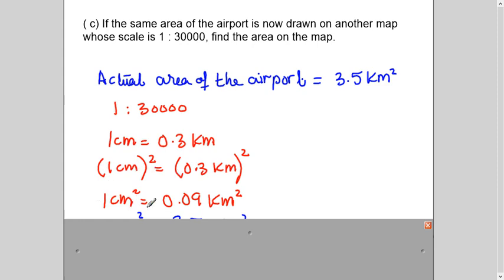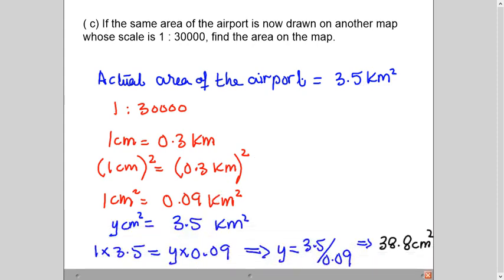And now 3.5, I will write underneath here and cross multiply. So this will simply give me the area on the new map. On this map, area of the airport will be 38.8 square centimeters. I hope it makes sense to you. Thank you very much for watching this video. If you liked it, learned it, please press like and subscribe button. You will get notification of my new videos. And please do share with your friends. They may also learn and get benefit out of it. Thank you very much. Take care. Allah bless you.